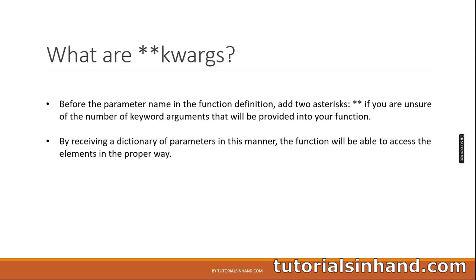What are **kwargs? Before the parameter name in the function definition, add two asterisks if you are unsure of the number of keyword arguments that will be provided to your function. By receiving a dictionary of parameters in this manner, the function will be able to access the elements in the proper way.